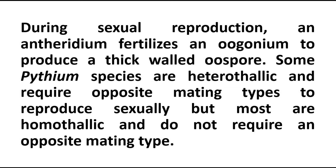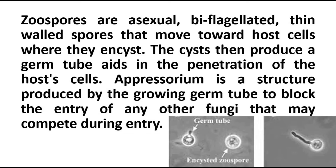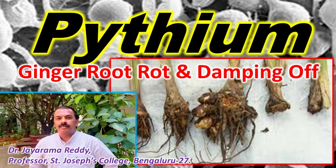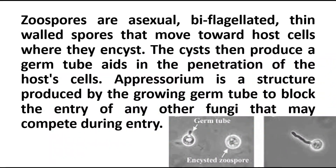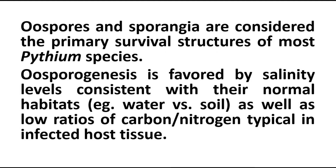Sexual reproduction in Pythium occurs by means of antheridium, the male reproductive organ, and oogonium, the female reproductive organ. The antheridium fertilizes the oogonium to produce the oospore, which is the sexual spore in case of Pythium. Zoospores are asexual; they are biflagellated, thin-walled spores that move toward the host cell where they encyst and later produce a germ tube to bring about germination. Appressorium is a structure produced by the growth of the germ tube to facilitate entry. Oospores and sporangia are considered the primary survival structures of most Pythium species.